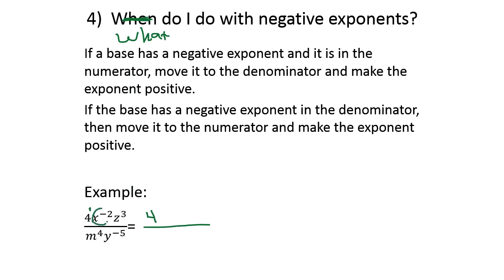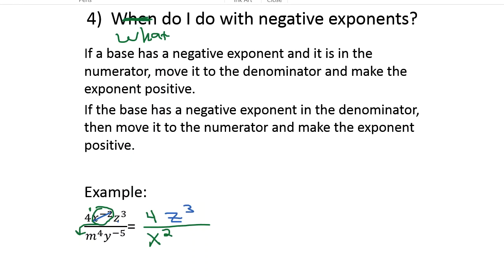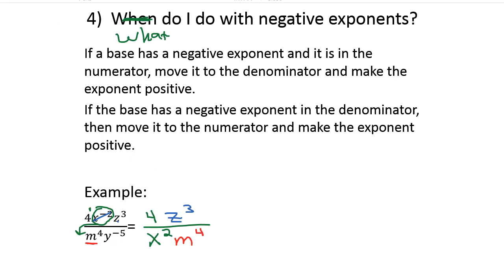X to the negative 2 — since x has a negative exponent — moves down to the denominator, becoming x to the positive 2. Flipping a letter from top to bottom changes the sign of the exponent. Z has a positive exponent, so it stays on top. On the bottom we have x squared because it moved down. We also have y to the negative 5; since that's a negative exponent, the y moves from the bottom to the top and becomes y to the positive 5.